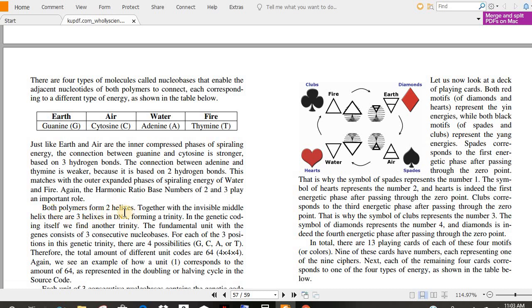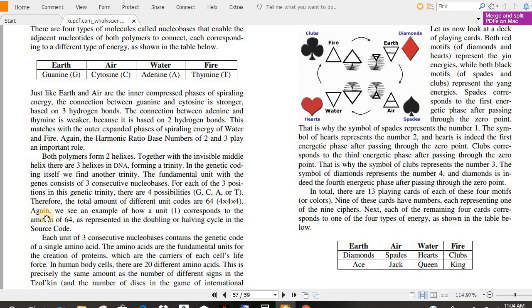Both polymers form two helixes. Together with the invisible middle helix, there are three helixes in DNA, which we don't normally hear about that, forming a trinity. In the genetic coding itself, we find another trinity. The fundamental unit with the genes consists of three consecutive nucleobases. For each of the three positions in the genetic trinity, there are four possibilities, G, C, A, or T. Therefore, the total amount of different unit codes are 64. Four times four times four. Again, if that doesn't just give you chills, I don't know what will. This is magic right here.